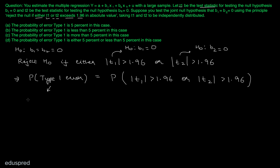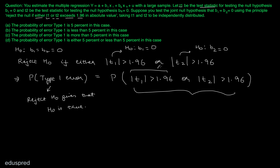Note that a Type 1 error is when you reject the null hypothesis given that the null hypothesis is true. These t-values correspond to these null hypotheses, and when we calculate the t-values we do so under the assumption that the null hypothesis is true. So the probability of Type 1 error equals the probability of the rejection event. For convenience in notation, let me call event A: |t1| > 1.96, and event B: |t2| > 1.96. This right-hand side is just P(A or B), which equals P(A) + P(B) − P(A ∩ B).